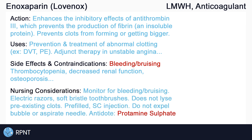Always assess and monitor for side effects of enoxaparin, mainly bleeding. Instruct clients to use electric razors when shaving rather than manual razors to reduce the risk of bleeding. Soft bristle toothbrushes can also be used to reduce gum bleeding. It is important to note that enoxaparin does not get rid of pre-existing clots — thrombolytics, also known as clot busters, are required to lyse or break up a pre-existing clot.